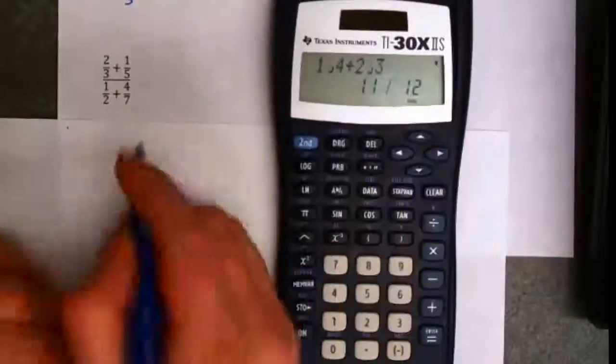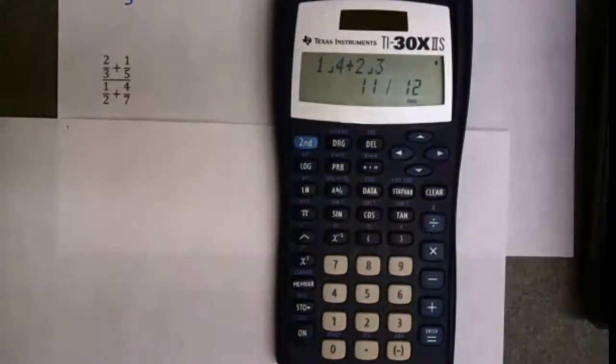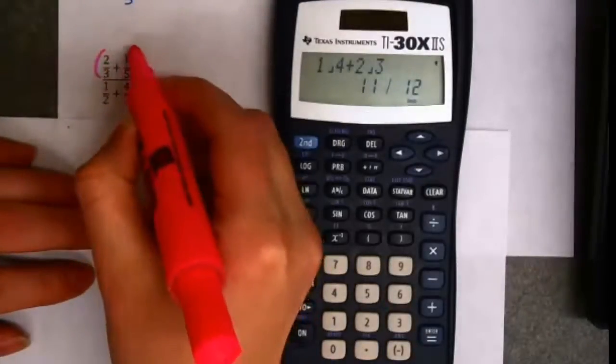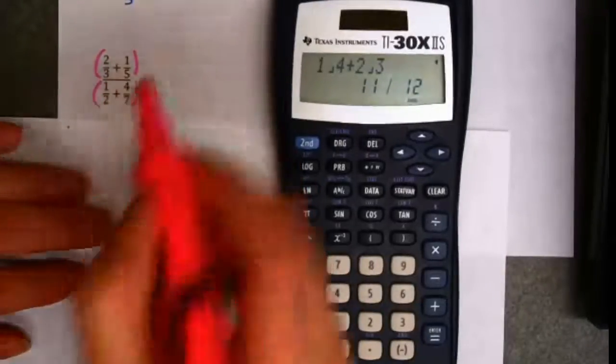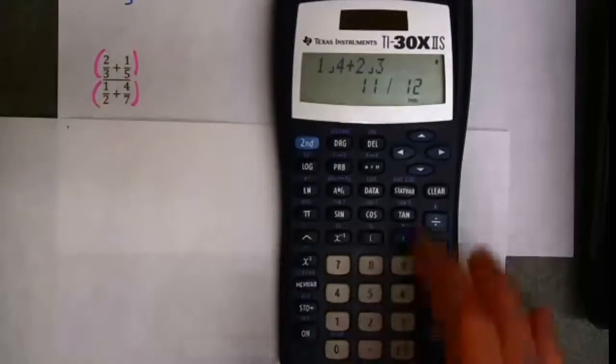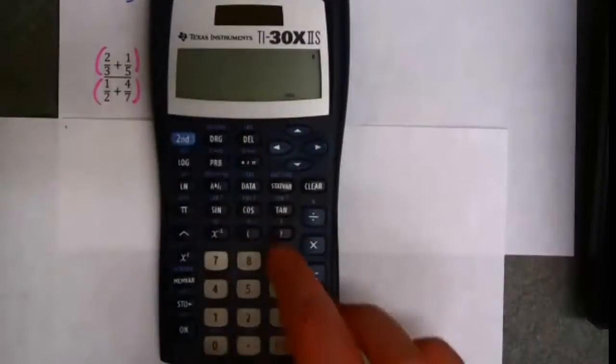I can even do this rather intimidating looking fraction. This is what we call a complex fraction. Now if you didn't listen to that rather long order of operations video, this is a fraction where there are invisible parentheses around the top and the bottom. So I would have to know that as I type this in. And I can type in the entire thing at once.